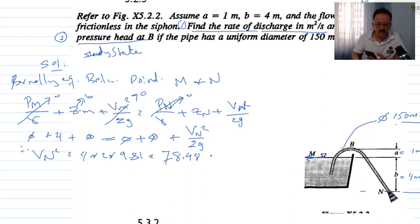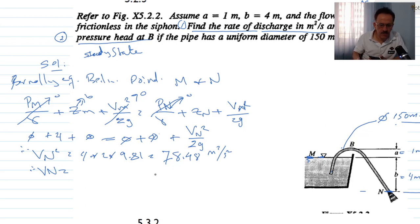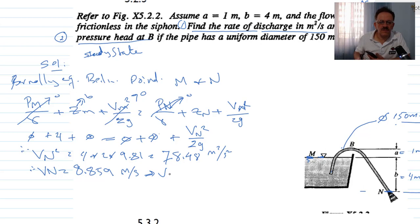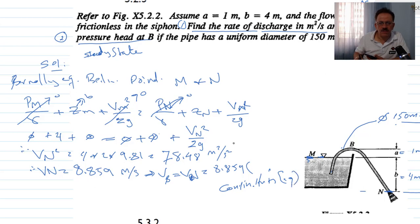Therefore, vN equals the square root of 78.48, which equals 8.859 meters per second. By the continuity equation, since the pipe diameter is constant throughout, the velocity at point B also equals 8.859 meters per second.